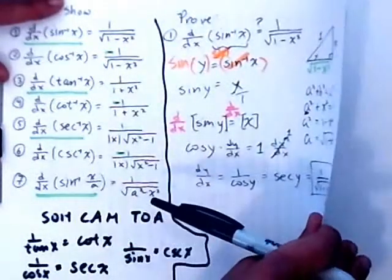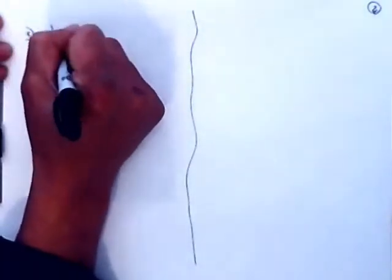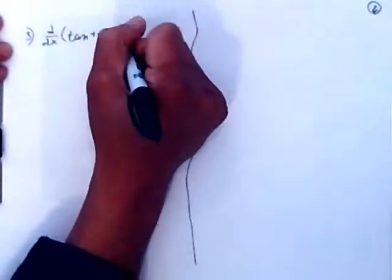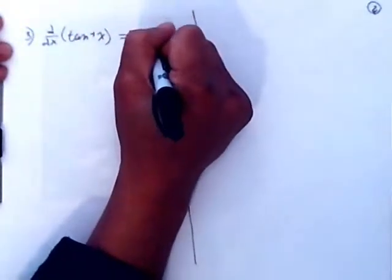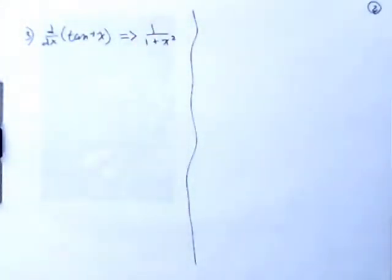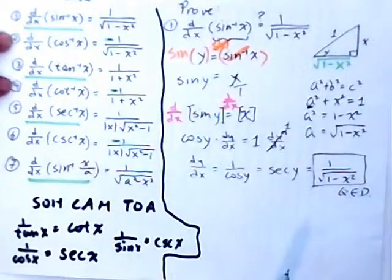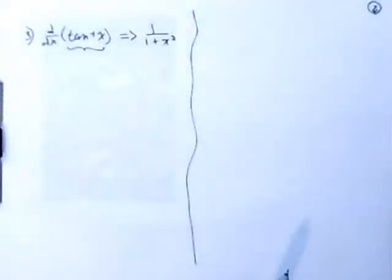We're going to do the third one now. Number 3: the derivative with respect to x of the tangent inverse of x, and show that it's equal to 1 over 1 plus x squared. Again, we're going to do the same thing — we call this y. It's the same process every single time. Once you get the first process down, the second, third, and fourth should be easy. I'm not going to do numbers 2, 4, and 6, but it's the same process every single time.